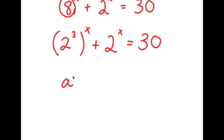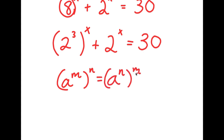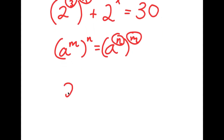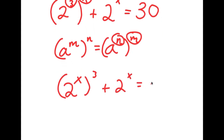If I have something in the form a to the power of m to the power of n, this is the same thing as a to the power of n to the power of m — I can switch the places of n and m. So in this case, I have 2 to the power of 3 to the power of x, and I'm going to switch the places of 3 and x. So I get 2 to the power of x to the power of 3 plus 2 to the power of x is equal to 30.